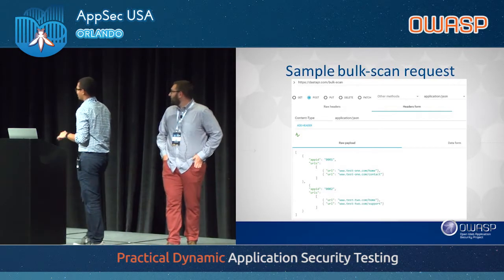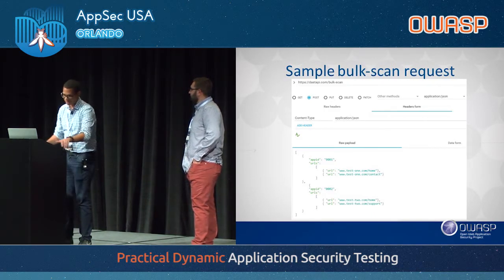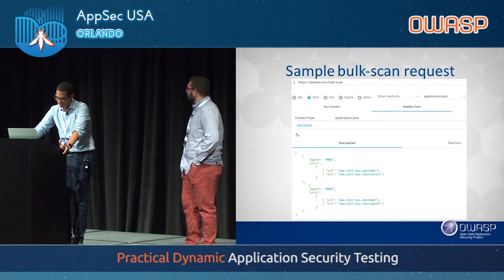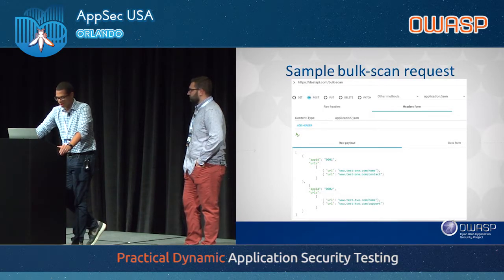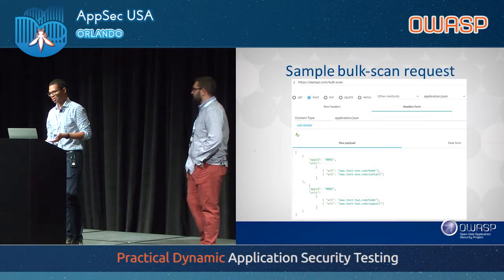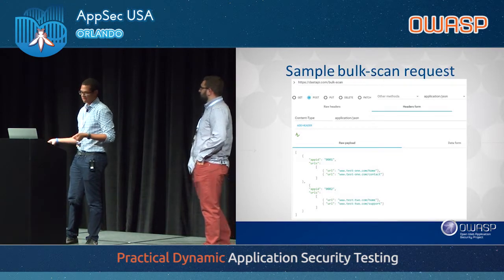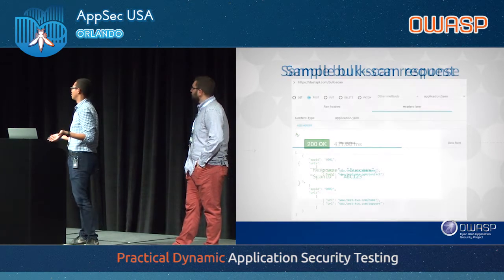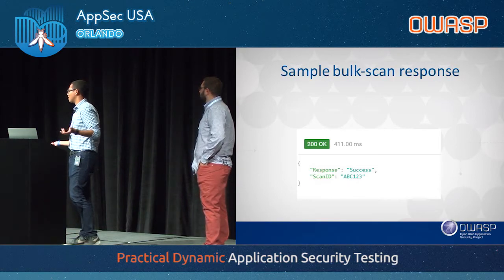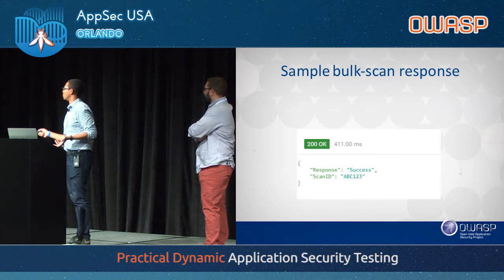This is a sample request for the bulk scan — it's just a POST request, very simple. You could do this from advanced REST client, Postman, whatever. In this JSON body, you have two apps each with two URLs. You can submit multiple applications and their URLs in one payload. The only things needed are an application ID and the URLs you wish to have scanned. All you get back is a response message or error message and your unique scan ID — in this example, ABC123.